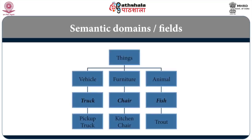Whichever domain we consider, it has three levels. There is the superordinate level at the top — things like vehicles, furniture, or animals. Then there is a basic level in the middle: for vehicle, the basic level term is truck; for furniture, it is chair; for animal, it could be fish. The third level is the subordinate level: for vehicle, pick-up truck; for furniture, kitchen chair; for animal, trout as a specific type of fish. Understanding how information stored at these levels becomes impaired is key to understanding semantic dementia.